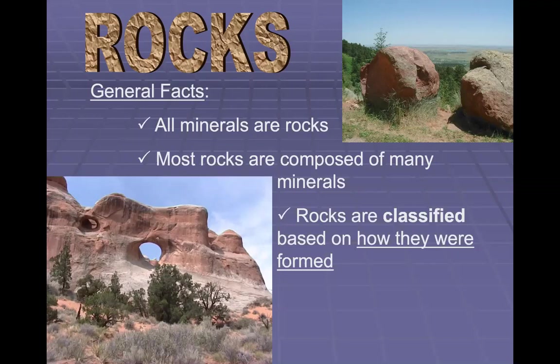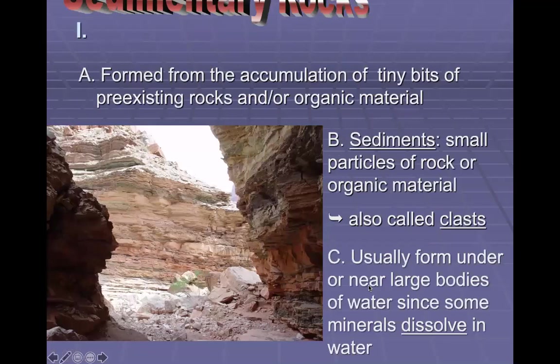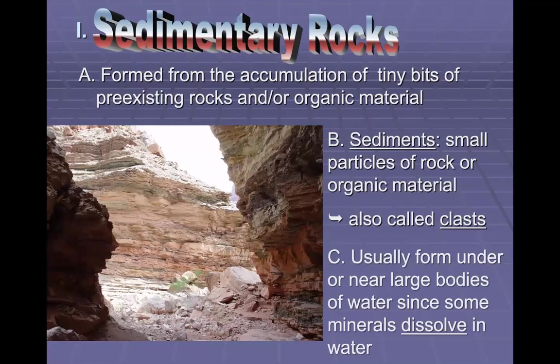Rocks are everywhere, so we need a system of classification to keep everything organized and to figure out what an unknown rock might be just by looking at it. We look at how rocks actually formed to determine which of the big three types they are, since the environment of formation causes very specific characteristics.